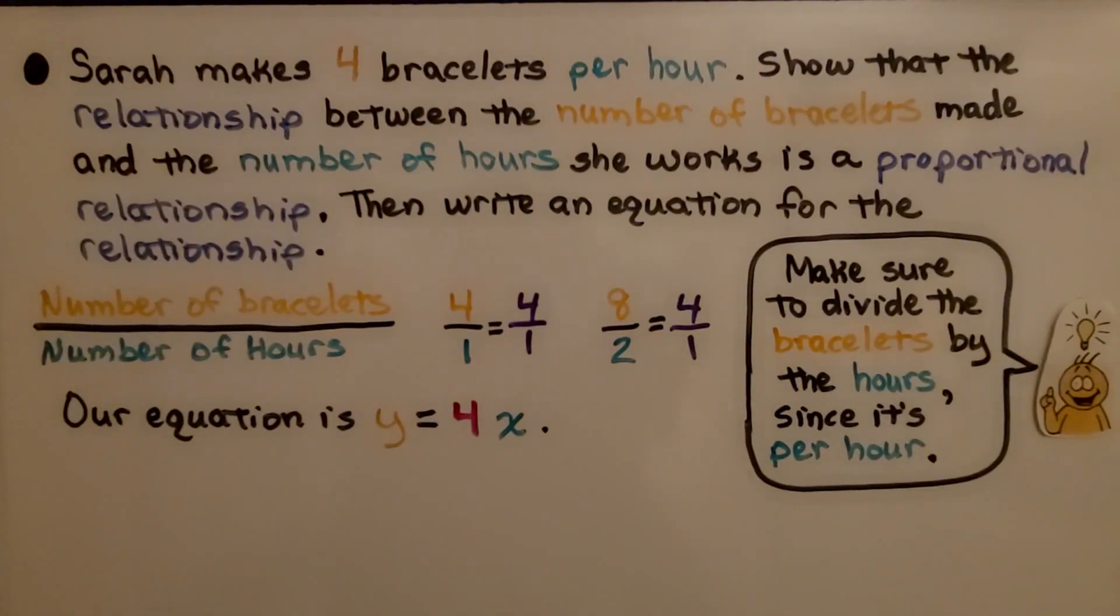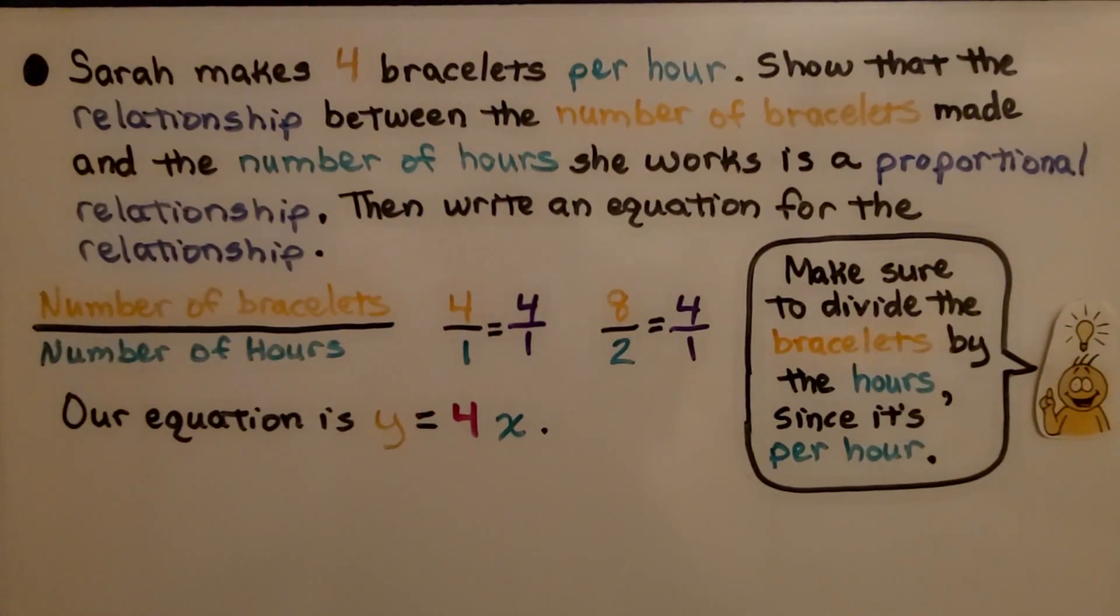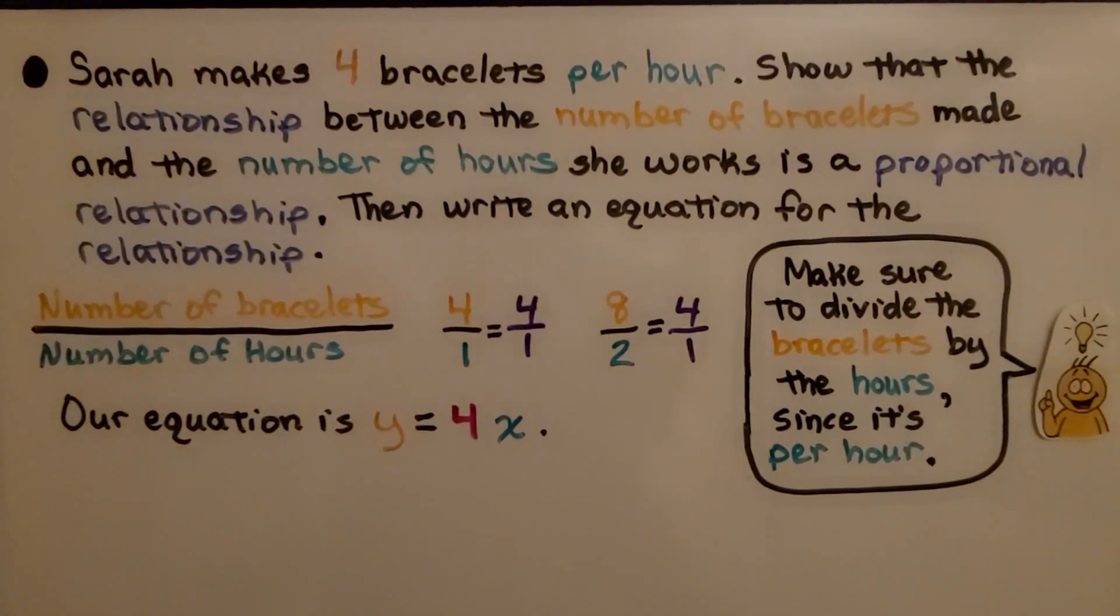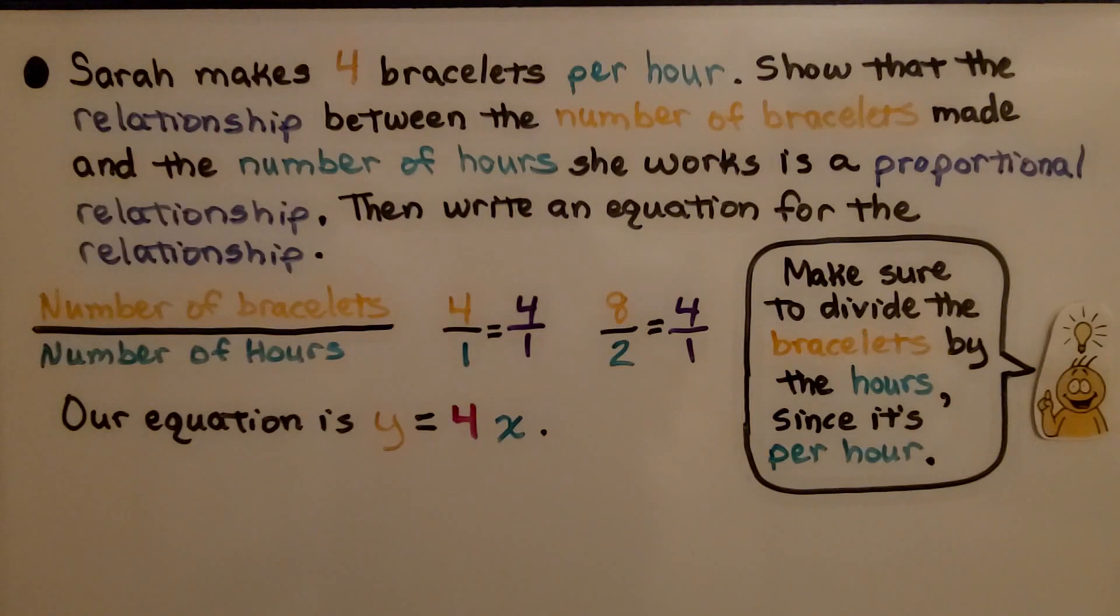Here's another problem. Sarah makes 4 bracelets per hour. Show that the relationship between the number of bracelets made and the number of hours she works is a proportional relationship. Then write an equation for the relationship.